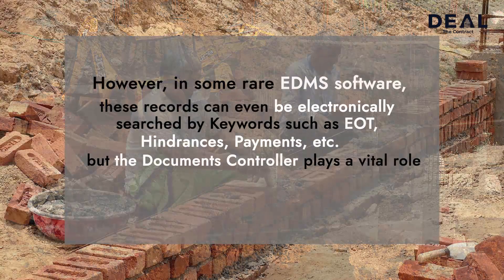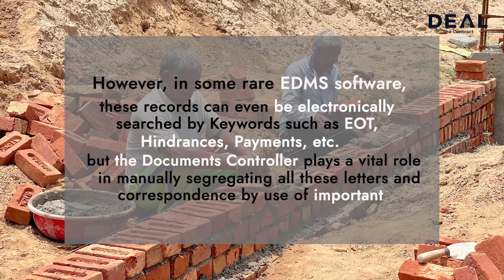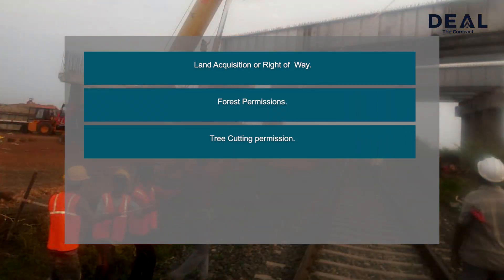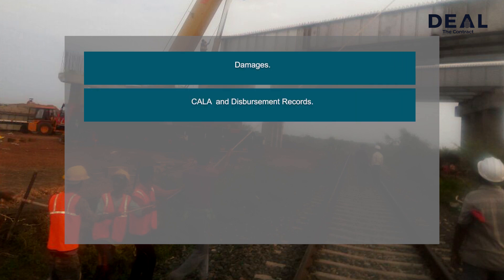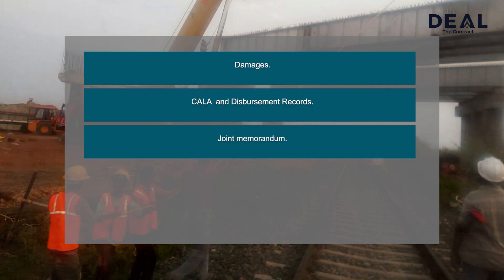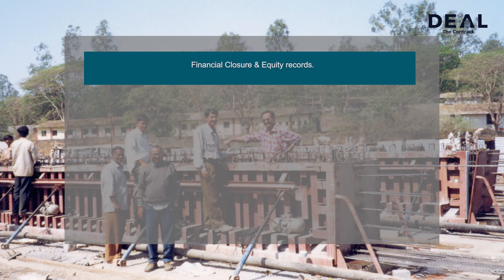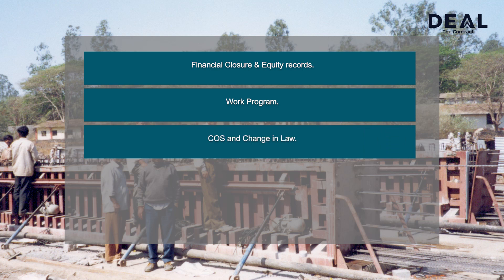But the Documents Controller plays a vital role in manually segregating all these letters and correspondence by use of important search keywords which are: land acquisition or right of way, forest permissions, tree cutting permissions, payments and related milestones, utility shifting, damages, Kala land disbursement records, joint memorandum, extension of time, lenders approval, financial closure and equity records, work programs, change of scope and change in law cases.